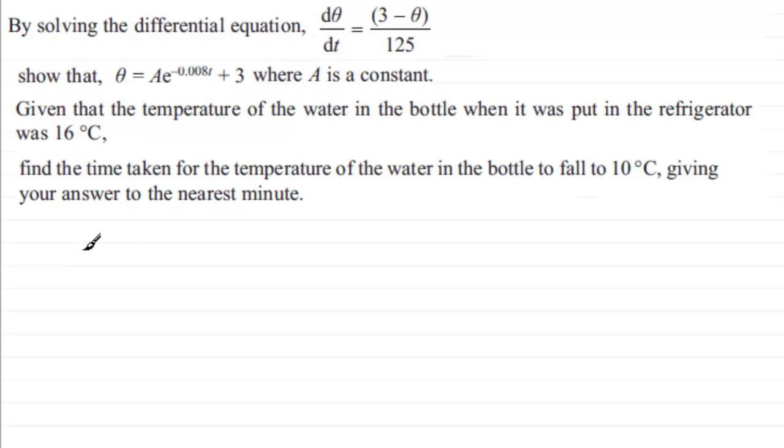So what we've got then is we're told that theta equals the constant A multiplied by e to the power minus 0.008 times T and then plus 3. And what we're given is that initially when T equals 0, the temperature of the bottle was 16 degrees C. So we can say that when T equals 0, the temperature given by theta was equal to 16.